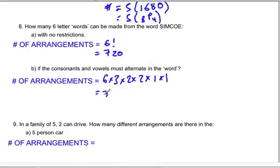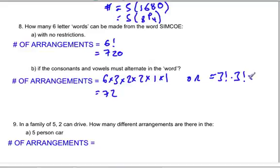This gives 72. We could also calculate this as 3 factorial times 3 factorial times 2, which is 6 times 6 times 2 equals 72. The reason we multiply by 2 is to account for whether a consonant comes first or a vowel comes first.